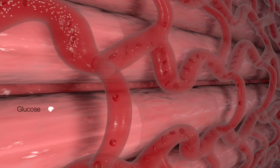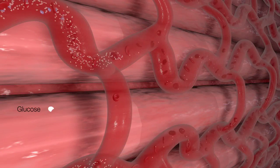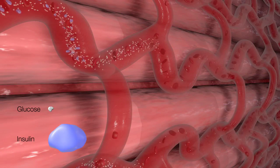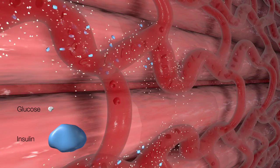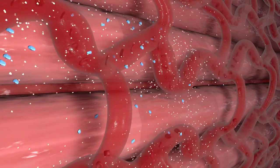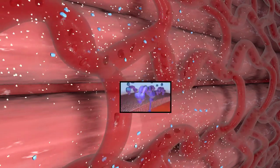Blood glucose levels rise after a carbohydrate-rich meal. Insulin, a hormone secreted by pancreatic beta cells, lowers blood glucose levels by allowing glucose to enter cells.